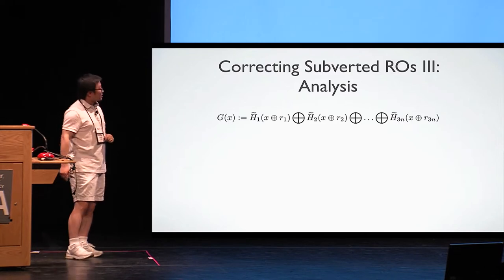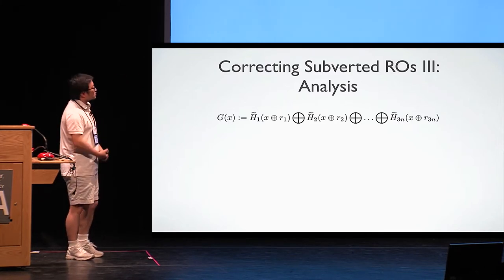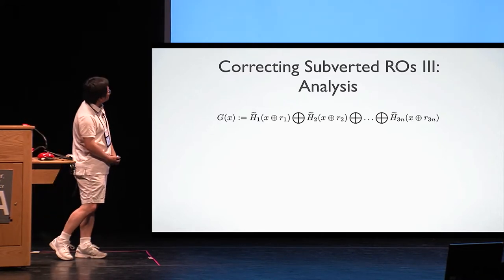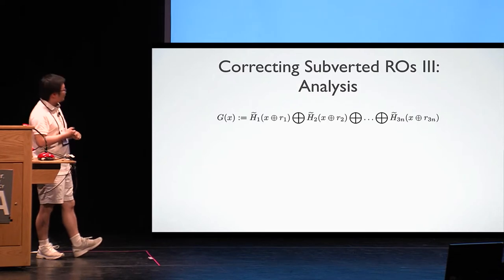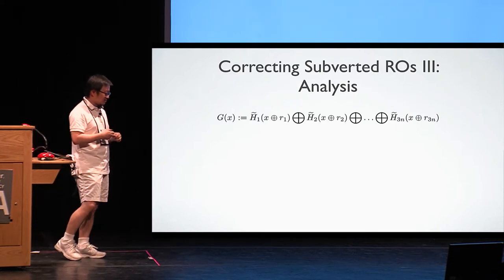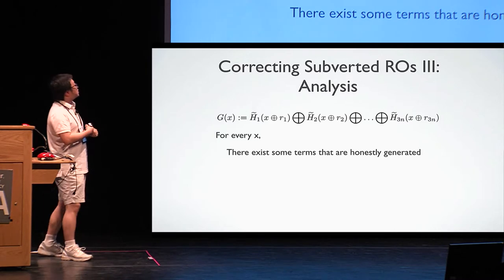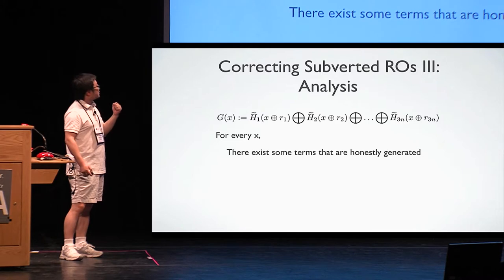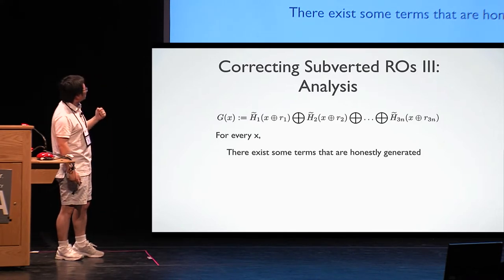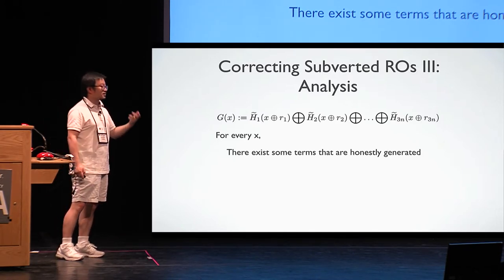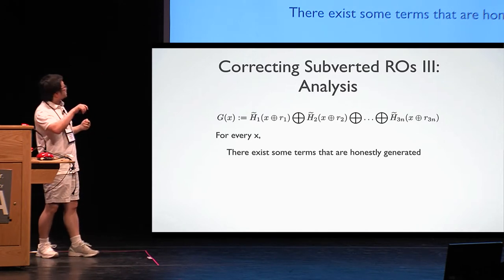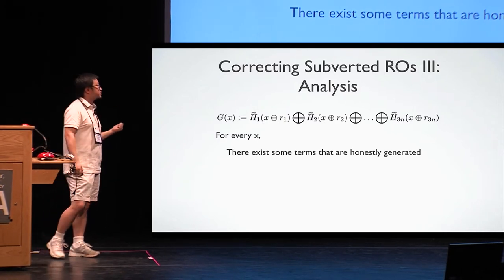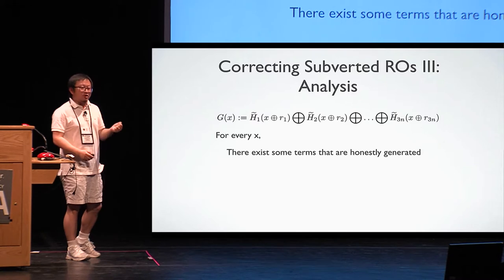Then let's try to analyze whether this construction really works. It turns out the analysis is surprisingly difficult, or maybe complex. Or maybe you guys can find a much simpler way, then let me know. So what we really want to show, we want to show that for every input x, there exists some term, or what we observe now, is for every input x, there exists some term that will be honestly generated. Honestly generated means the output of this particular input value is equal to the specification. But this is not enough at all.